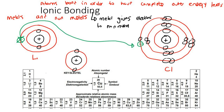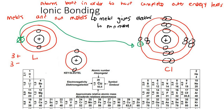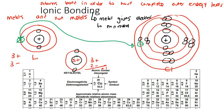The next thing we need to discuss is what happens to each atom's charge. Lithium originally had three protons and three electrons. After giving away one electron, it still has three protons but only two electrons, so it becomes positively charged. The chlorine, because it gained one electron, is going to be negatively charged — it will have a negative one charge.